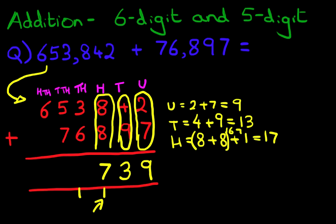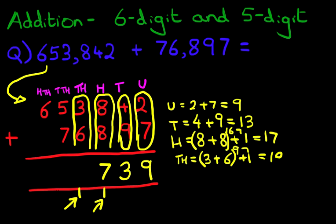Now, we're going to add the thousands. That's the three plus six. And, don't forget the one over here. The thousands is three plus six plus one. Let's put the brackets around the first two numbers. Three plus six is nine plus the one is ten. Let's write this down. One here and zero over here. Ten.